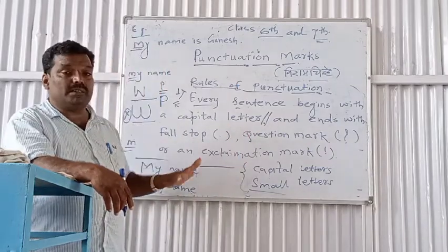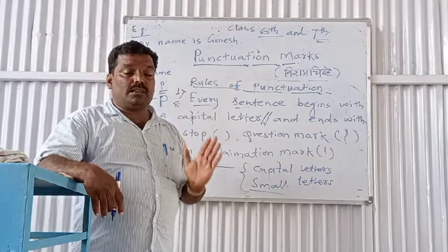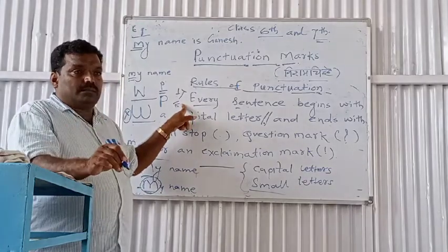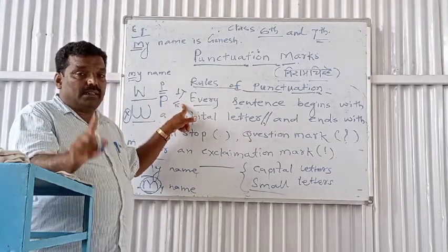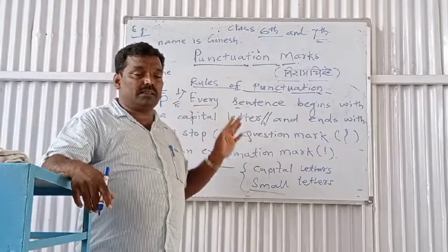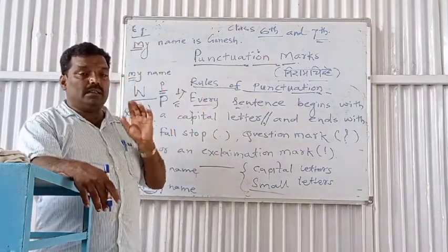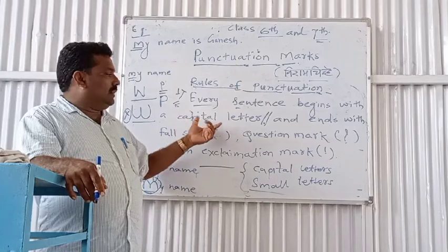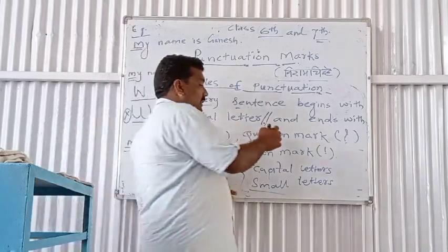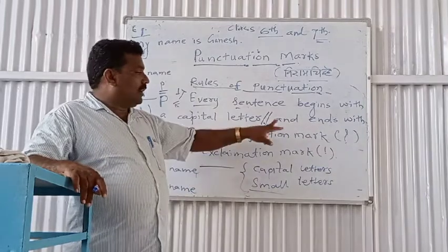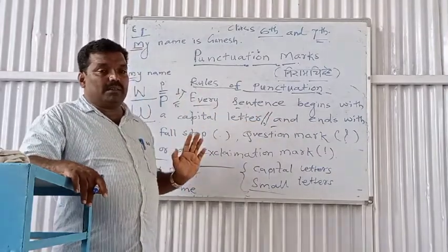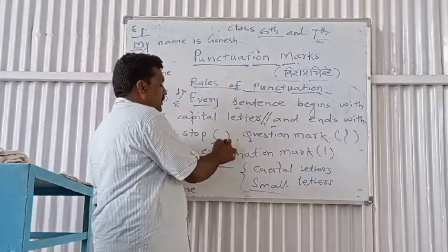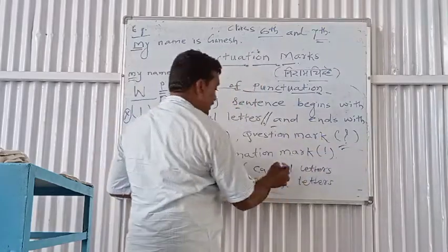By writing, you should think about each and every sentence. Every sentence begins with a capital letter, and every sentence ends with a full stop, a question mark, or an exclamation mark.